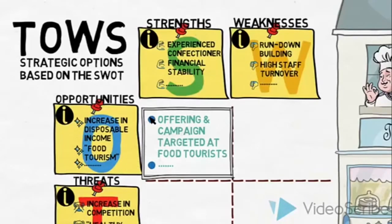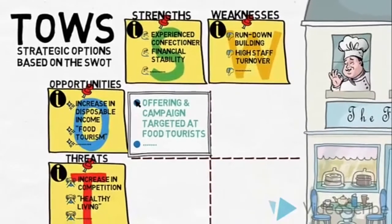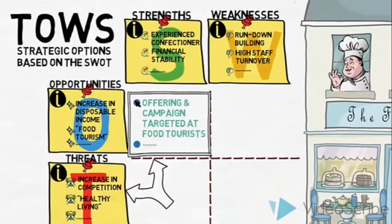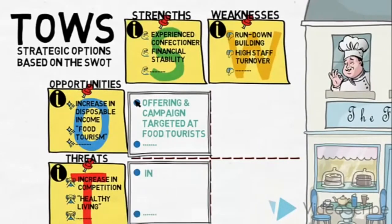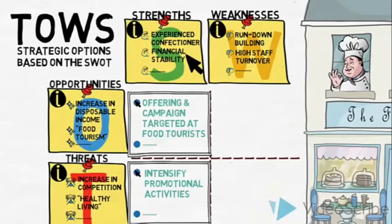Now let us see what strategic options our strengths and threats could generate. One option could be to intensify promotional activities. Our strong financial situation should provide us with the resources needed to face the threat of increasing competition.